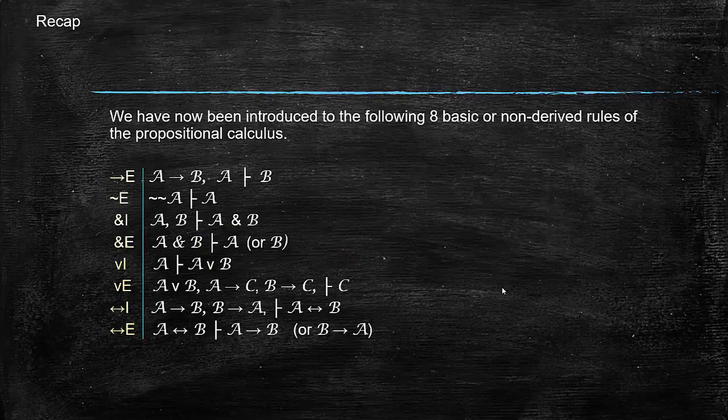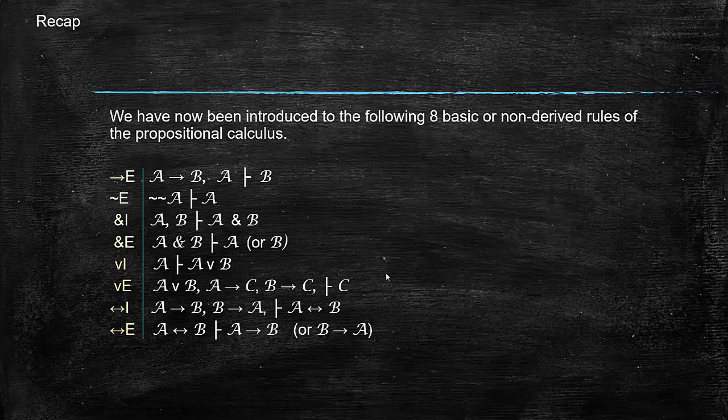Okay, so what you've learned so far in this module on the propositional calculus is eight basic rules: conditional elimination, negation elimination, conjunction introduction, conjunction elimination, disjunction introduction, disjunction elimination, and the two rules for the biconditional that we just learned. These rules are just given to you.